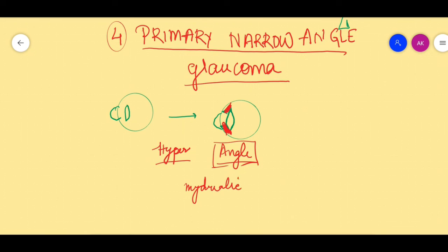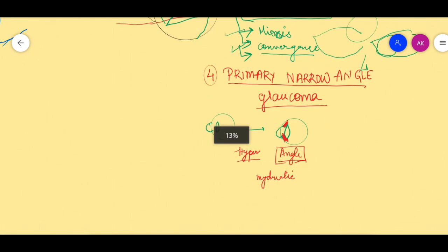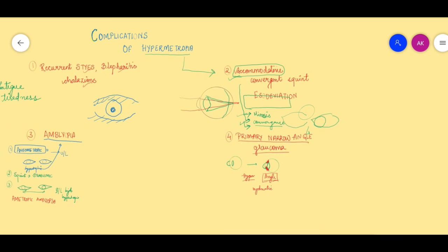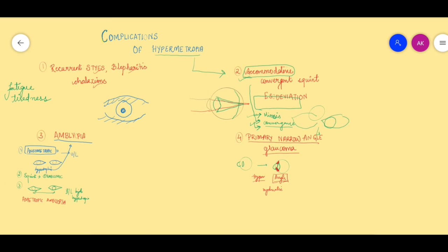So to summarize, there are four major complications which can happen if we do not treat hypermetropia. These are recurrent styes, blepharitis, and chalasia; accommodative convergent squint; amblyopia; and primary narrow angle glaucoma. If you can think of more complications, do mention them in the comment section. Thank you.